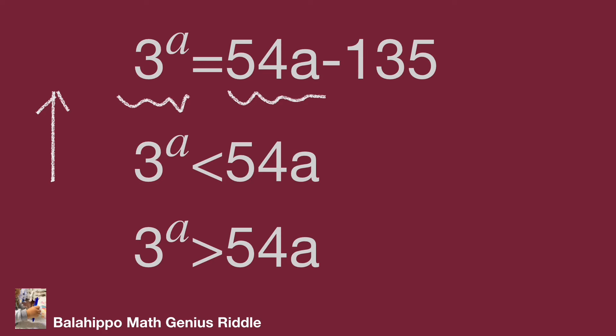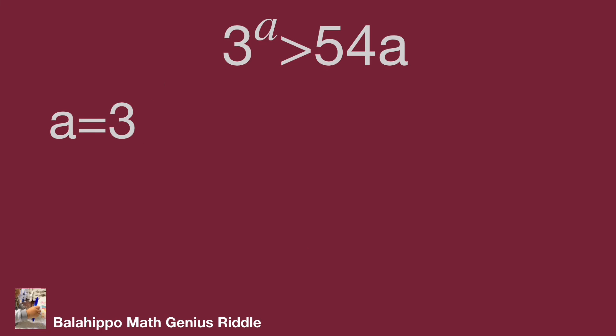We got a larger than or equal to 3. When a equals 3, 3 power 3 equals 27. 54 times 3 equals 162. So 3 power a is less than 54a.